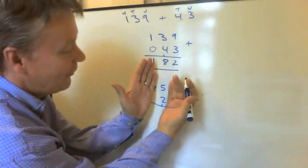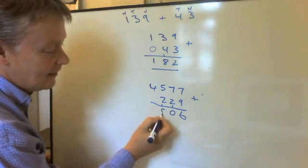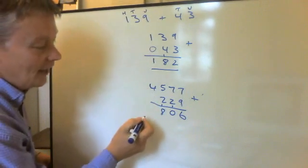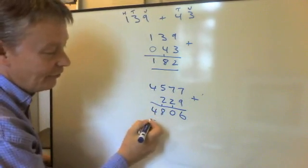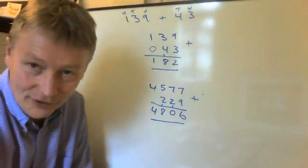And then 5 add 2 is 7, plus 1 is 8. And 4 add nothing there is 4. So the answer to this question is 4,806.